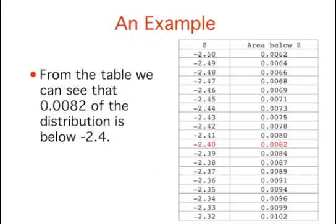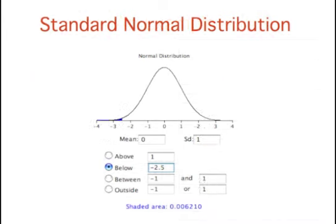From the table, we can see that 0.0082 of the distribution is below negative 2.4. There is no need to transform to z if you use the calculator as shown here.